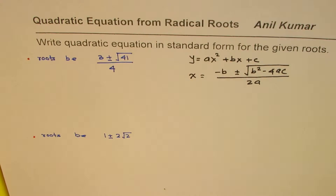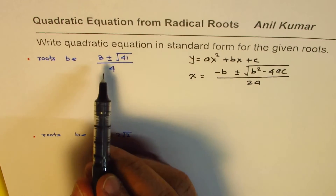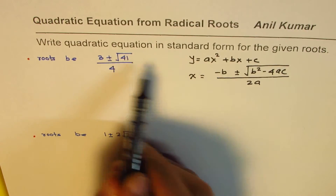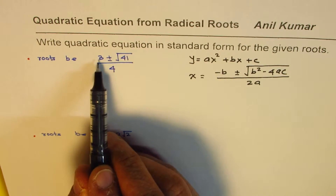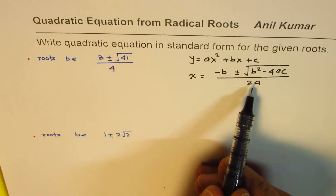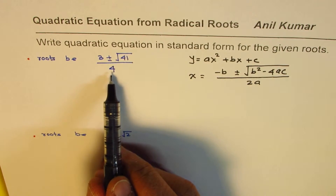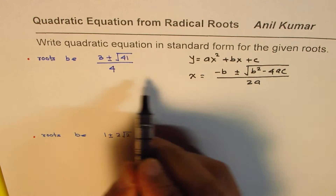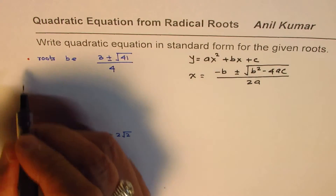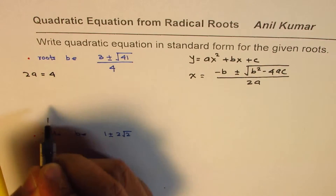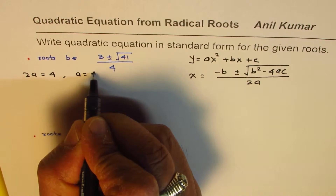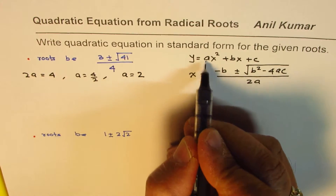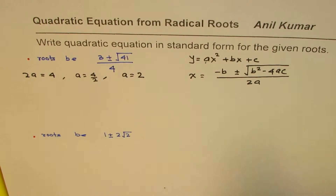Now let's see how to do it. We have (3 ± √41) / 4. If you compare, −b equals 3, so b equals −3. For a: 2a is in the denominator, so 2a = 4, which means a = 4/2, so a = 2. Such a simple comparison gives you a directly.